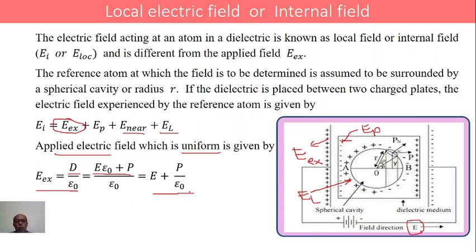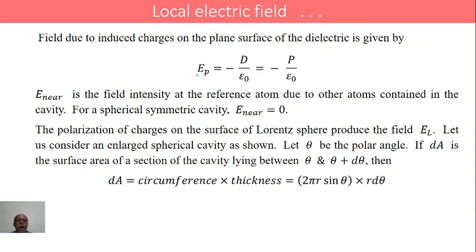Coming to the second one, Ep — the field due to polarization of the dielectric material — it is given by Ep equals minus D by ε₀, or simply minus P by ε₀. This is the electric field due to the polarization of the dielectric slab.